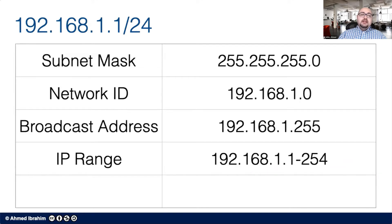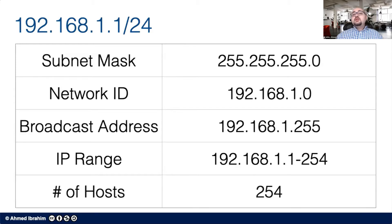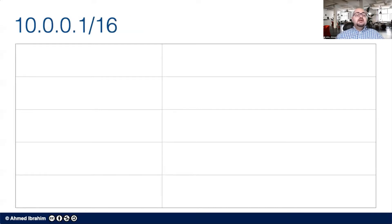The number of usable hosts in this network is 254, calculated as 256 minus 2 — subtracting the network address and the broadcast address. Now let's apply the same logic to 10.0.0.1/16. A /16 means there are 16 ones in the subnet mask.